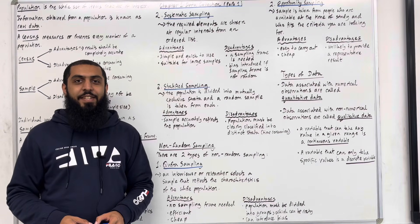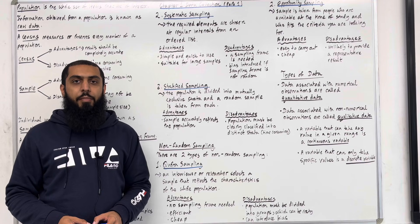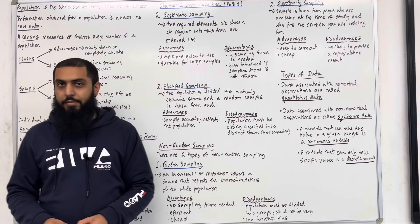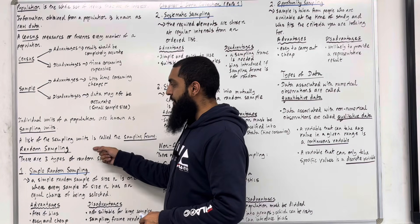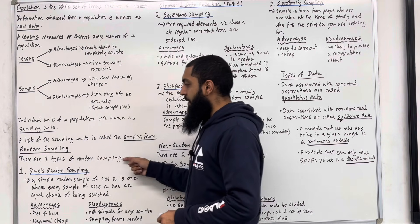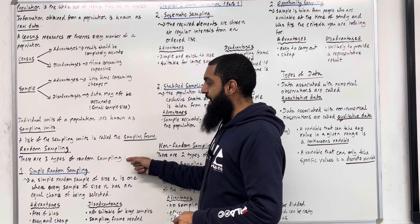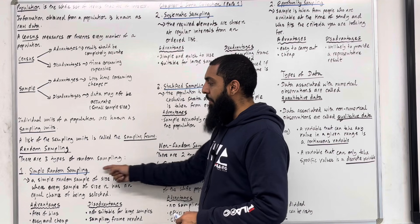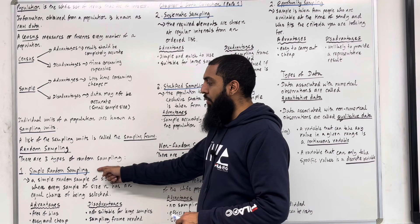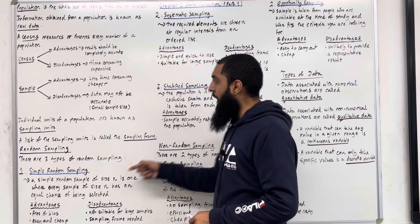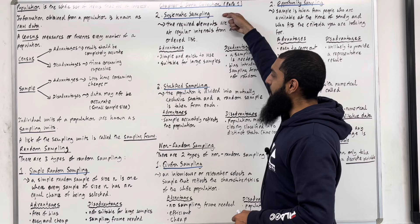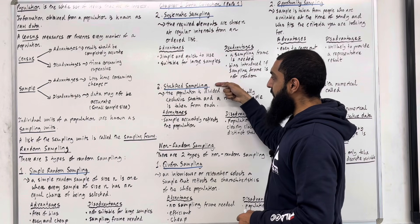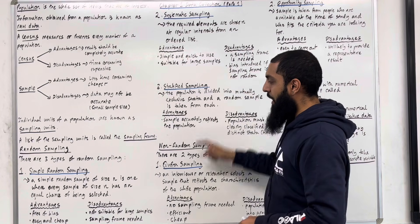I am now going to go through random sampling techniques. There are three types of random sampling: number one, simple random sampling; number two, systematic sampling; and number three, stratified sampling.